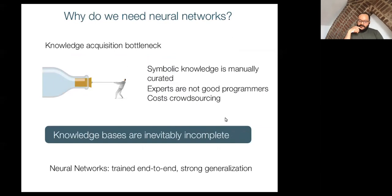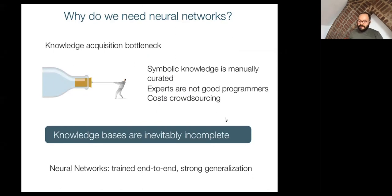The first thing I want to discuss is why we need neural networks. Symbolic knowledge is usually manually encoded or curated, and this is the main bottleneck for constructing really large ontologies or knowledge bases. It's very demanding — you don't have enough experts, and experts may not know how to express knowledge in a given formalism. Crowdsourcing can be expensive for very large knowledge bases.